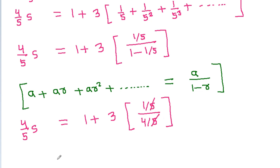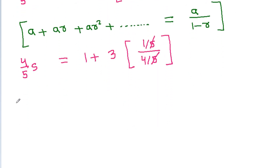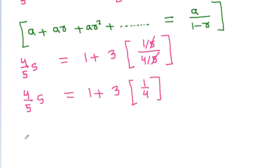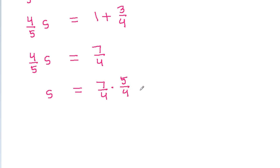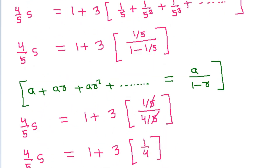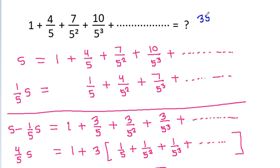The 5s cancel, so (4/5)S = 1 + 3 times 1/4. Therefore (4/5)S = 1 + 3/4 = 7/4. So S = 7/4 times 5/4 = 35/16. The answer is 35/16.